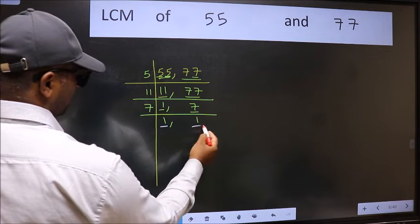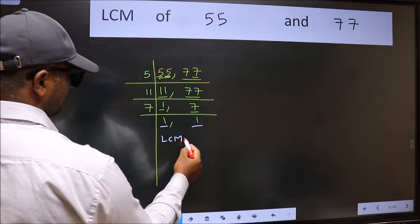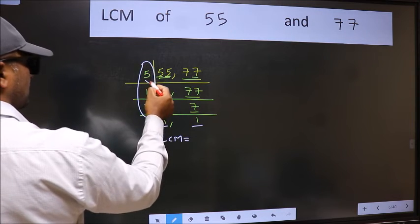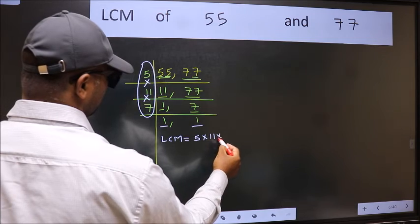So we got 1 in both places. So our LCM is the product of these numbers. That is 5 into 11 into 7.